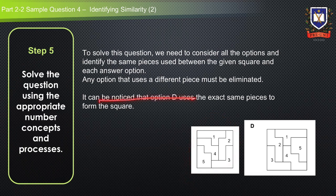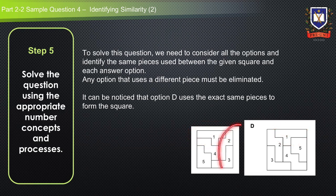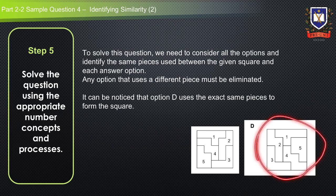We notice that option D uses the exact same pieces to form the square: shape 1 is here where it's flipped over, shape 2 is here also flipped over, shape 3 is here, shape 4 is here, and shape 5 is here. The exact same shapes have been used to form another square, and therefore the answer is D.